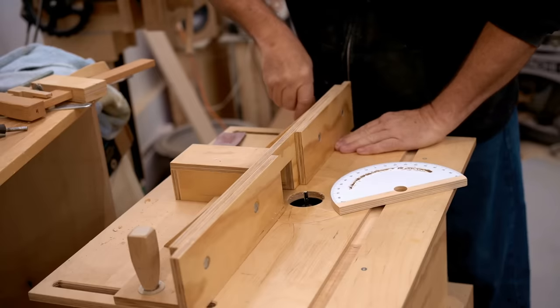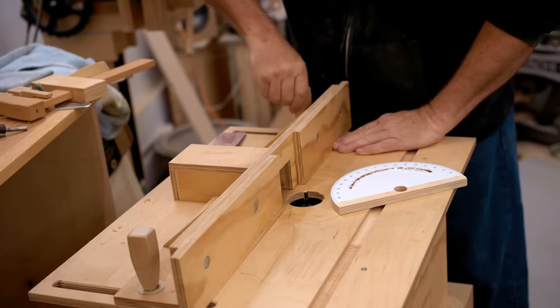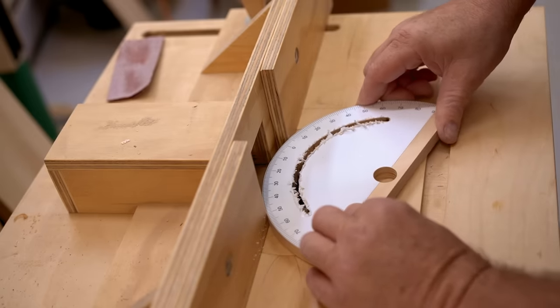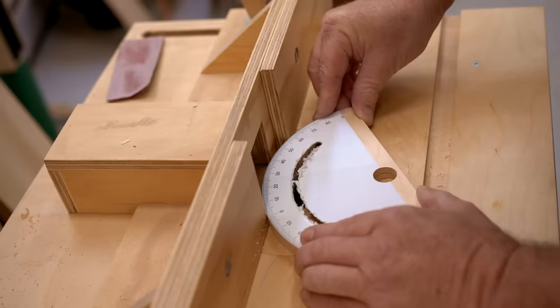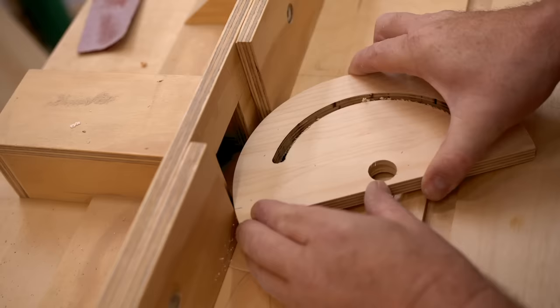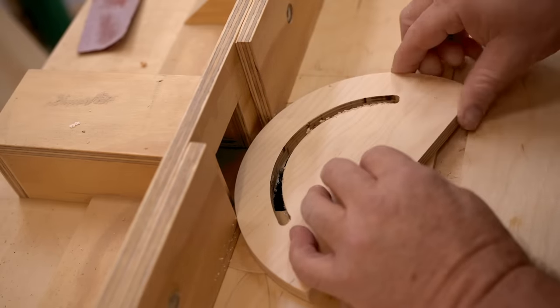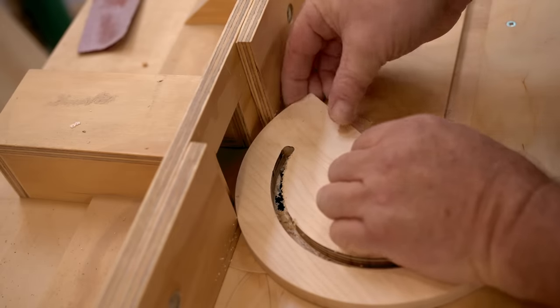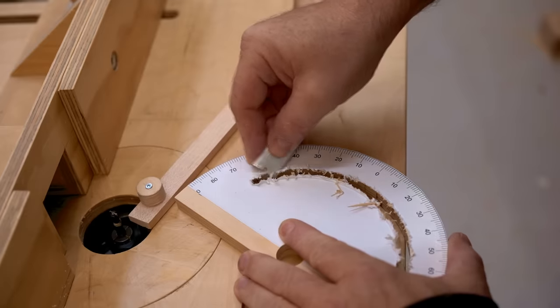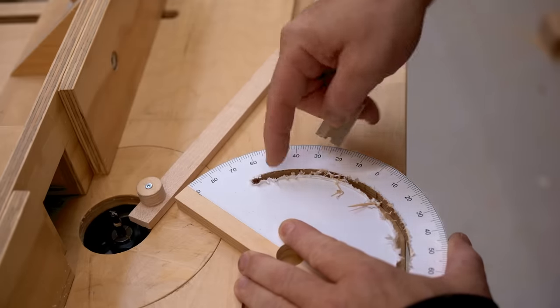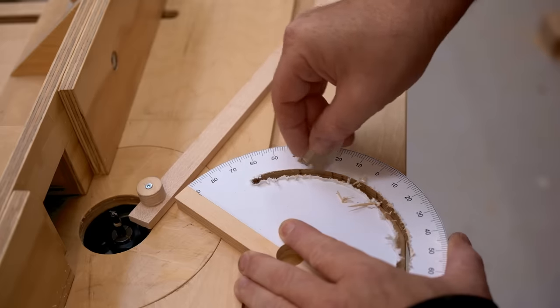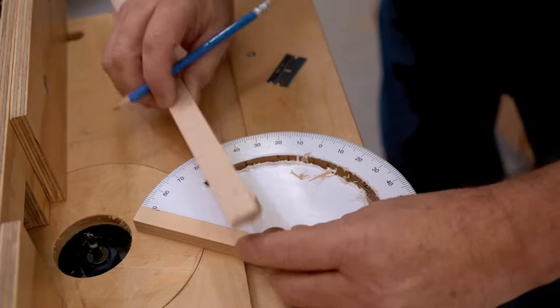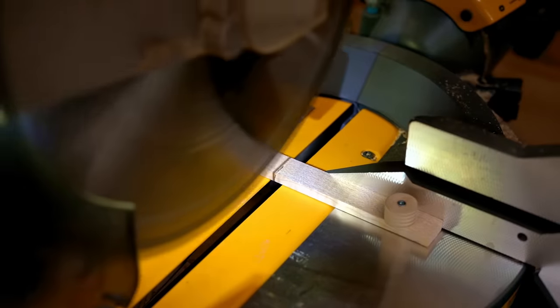After I got the slot cut all the way through, I moved the fence back to widen out the slot and cut it again. This left a lot of fuzzy paper on the surface. The easiest way to clean that up is with a sharp knife or razor blade. Or you can cut all that paper away that you don't need. All you really need is the scale on the outside.